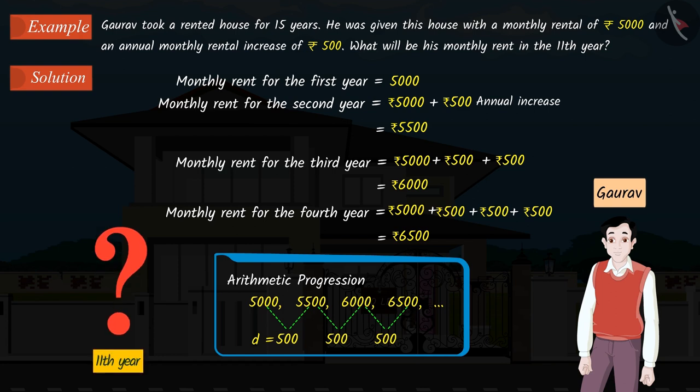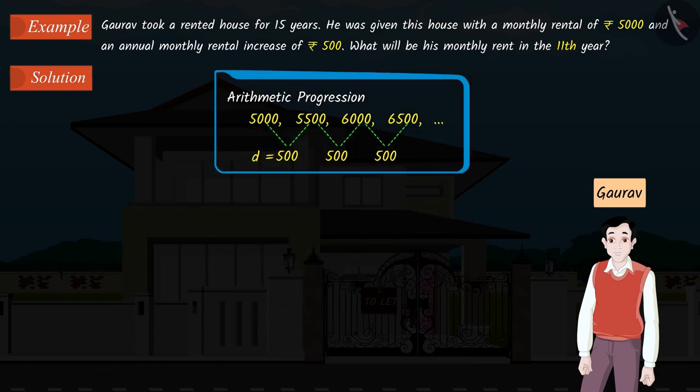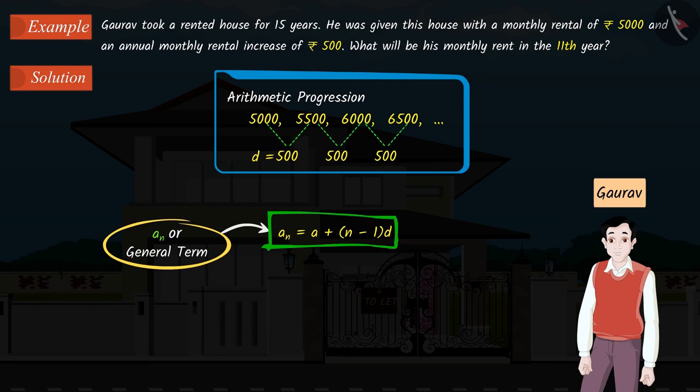We have to find the monthly rent for the 11th year. Now, tell me what will we do to find the value for the 11th year. Absolutely right! Now, we will use the formula for the nth term, AN or the general term of an AP.